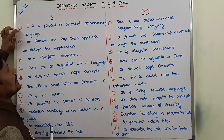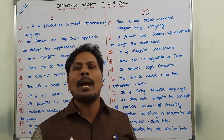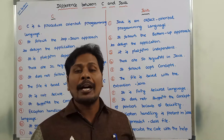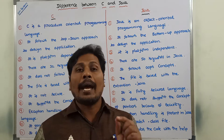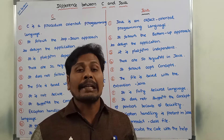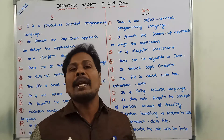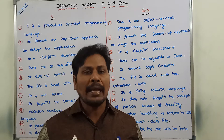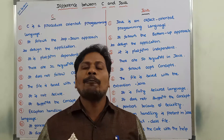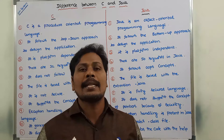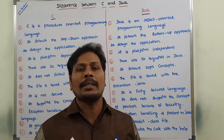First point: C is a procedure oriented programming language. Every C program can be defined in terms of functions or procedures. A function can return a value but a procedure does not return any value. So C language is a procedure oriented programming language. Whereas Java is an object oriented programming language — without using a class we cannot write any single program in Java. Hence Java is a pure object oriented programming language.